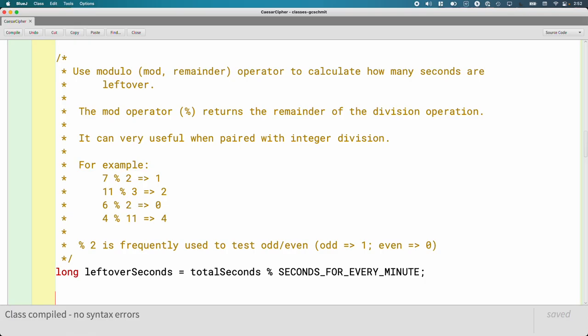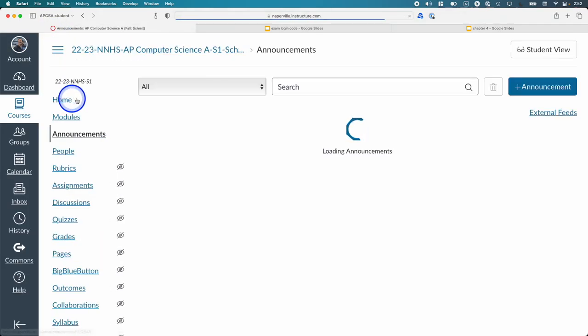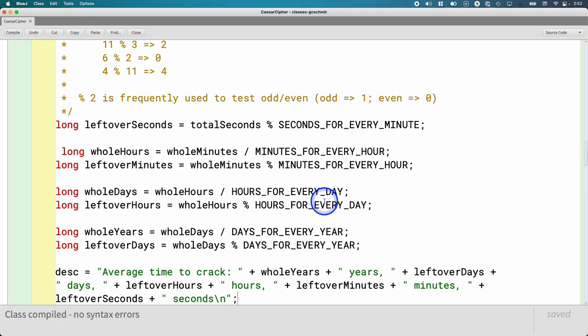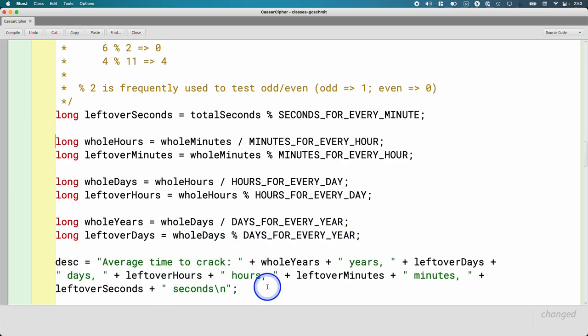This is good, but we also want to know how many whole hours we have, and how many leftover minutes, and how many whole days we have, and how many leftover hours, and how many whole years we have, and leftover days. That's a lot of code to type. It's basically the same two lines of code over and over again. So we're not gonna waste time typing that out. Instead, if you go to Canvas and you go to our announcements, the most recent announcement is a code snippet of the rest of the code we need. You can just copy this out of Canvas and paste it right here. It's the same integer division mod operator pattern repeated. Then we build up a really nice description string.